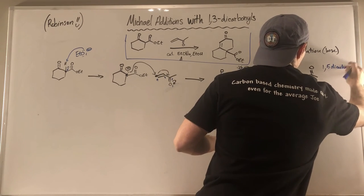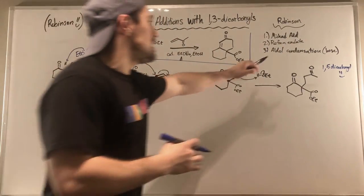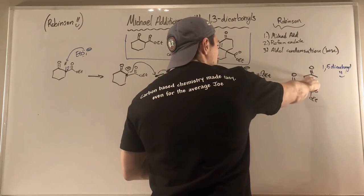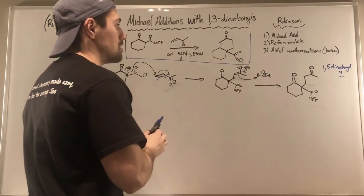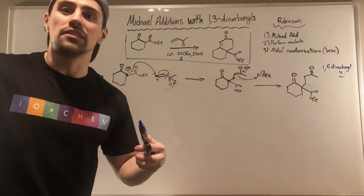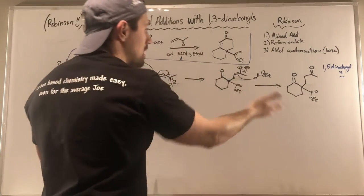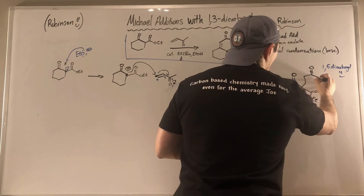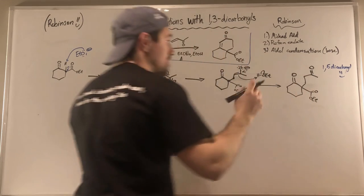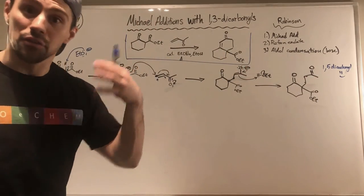Now we're in Robinson annulation territory. We need to reform an enolate to do an aldol condensation. We have a choice — form the enolate from this alpha carbon or the other one. To get a Robinson annulation — meaning formation of a six-membered ring — if we generate the enolate from this alpha carbon and attack counting 1, 2, 3, 4, 5, 6 — that looks promising. The alternative would count only 1, 2, 3, 4 — giving a four-membered ring. Clearly a six-membered ring is preferred over a four-membered ring.